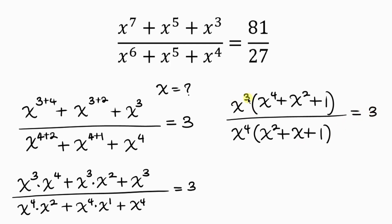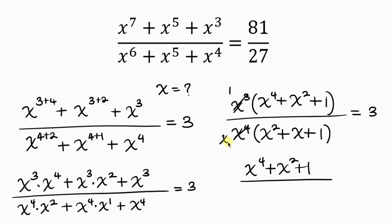Now let's divide. x to the 3 divided by x to the 3 is 1, so 1 times the expression in brackets gives the same expression: x to the 4 plus x squared plus 1, all over x times x squared plus x plus 1, equal to 3.